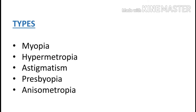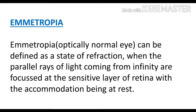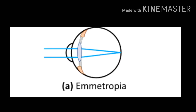Next are the types of refractive error: myopia, hypermetropia, astigmatism, presbyopia, and anisometropia. First, emmetropia — the optically normal eye — can be defined as a state of refraction when parallel rays of light coming from infinity are focused at the sensitive layer of the retina with accommodation being at rest. In emmetropia, infinity parallel light rays properly focus on the retina, producing a clear image, as seen in the diagram.